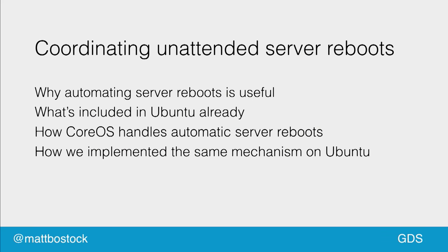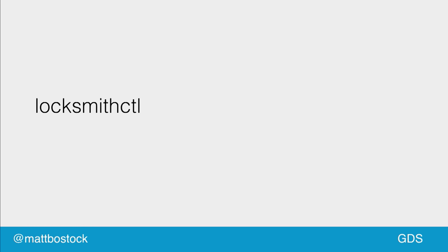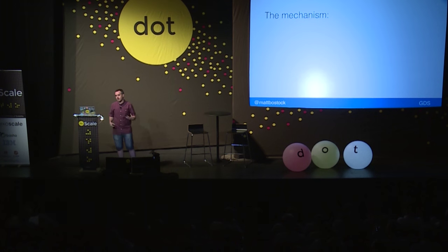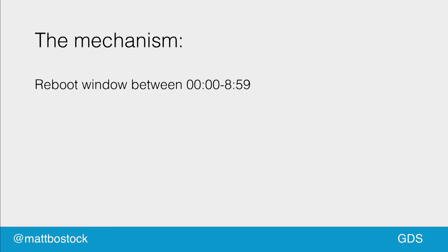CoreOS looks really interesting, but we're not using it right now — we're using Ubuntu, and we have a lot of servers on Ubuntu. So how can we apply the same mechanism to Ubuntu? As part of Locksmith there's a small utility called Locksmith Control. It's very simple: it allows you to query the status of the reboot lock, lock a machine, or unlock it. So we used Locksmith Control with Ubuntu. We started prototyping this in Bash. We installed Locksmith Control on all our machines, and we had a Bash script running as a cron job. The cron job ran during a reboot window between midnight and 9 a.m., so machines would reboot overnight. The cron job ran every minute and went through a series of steps to decide if it was safe to reboot.